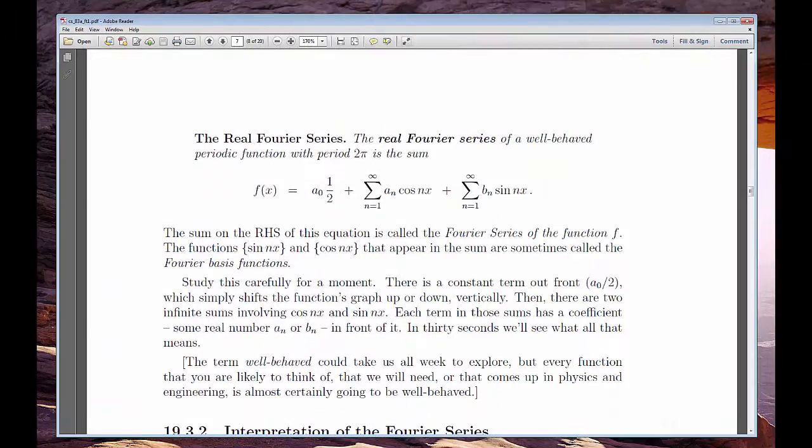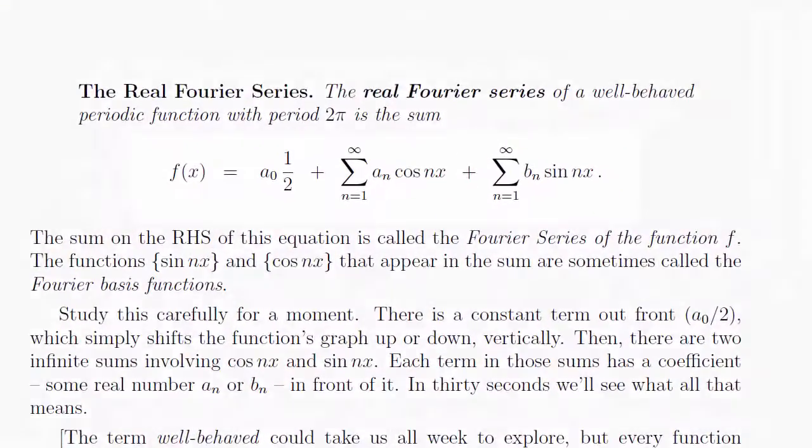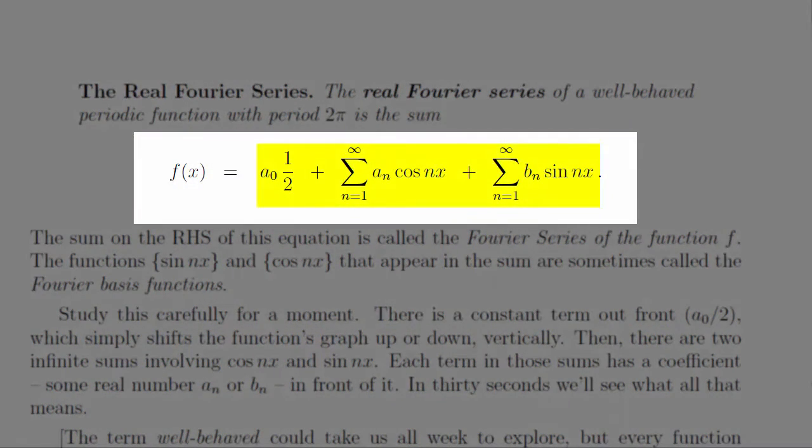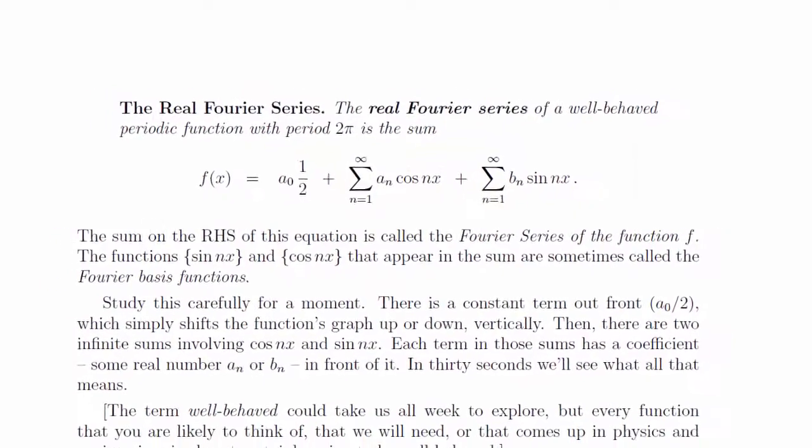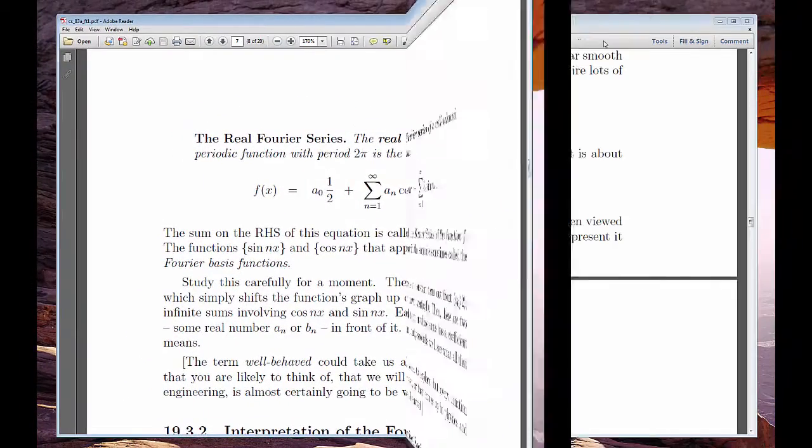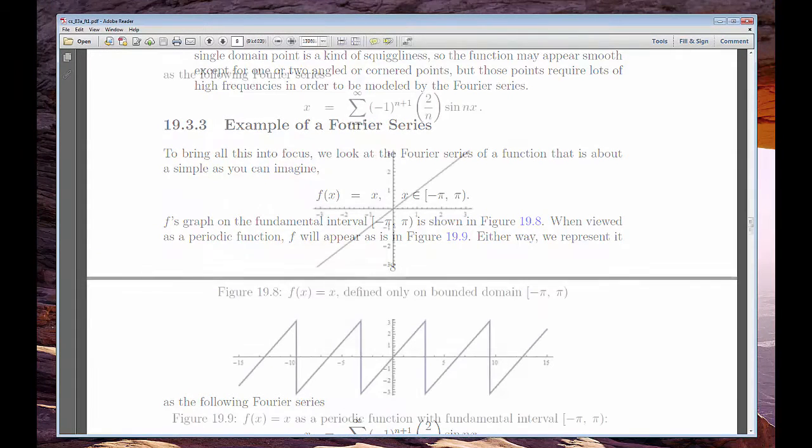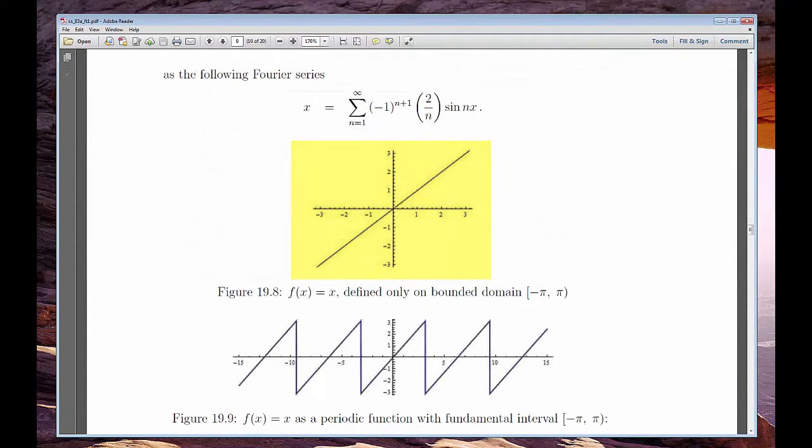Next comes the big news. Any function that falls in the category I just described can be written as a sum of sines and cosines. To truly grasp the wonder and irony of this fact, take a simple function like f of x equals x, considered either as having compact support between minus pi and pi.